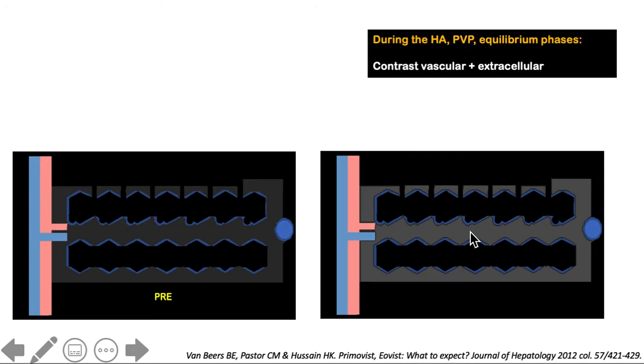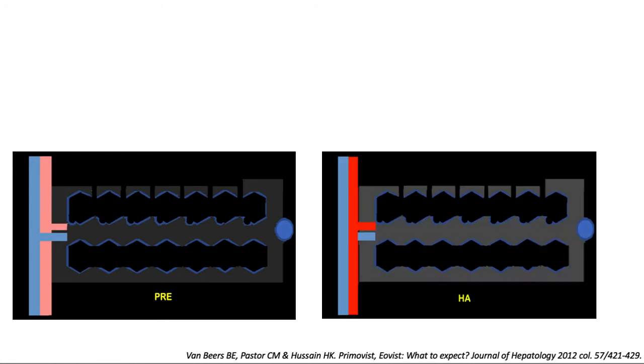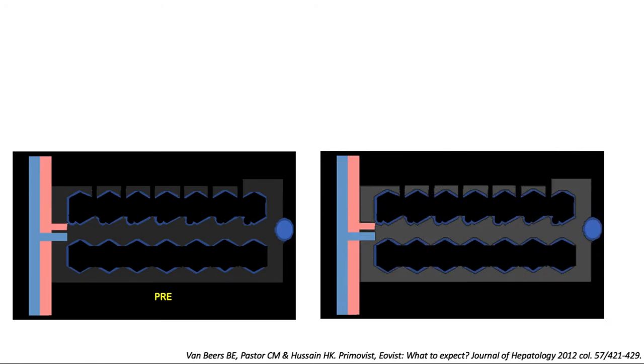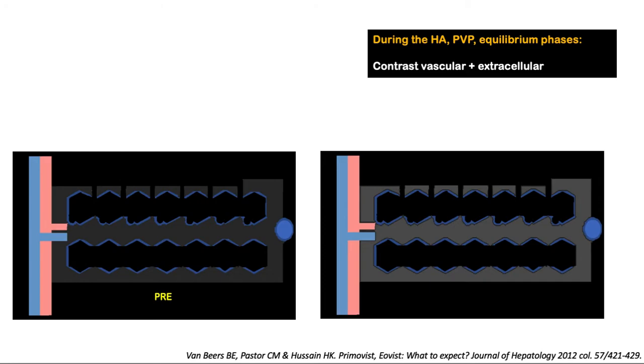We can say therefore that on the arterial, portal venous, and equilibrium phases, the contrast is mainly in the vascular and extracellular spaces.